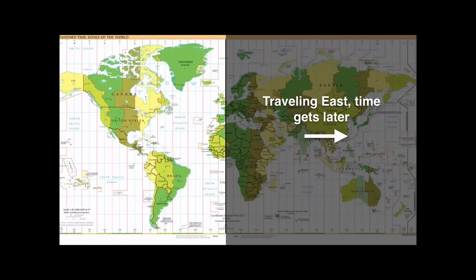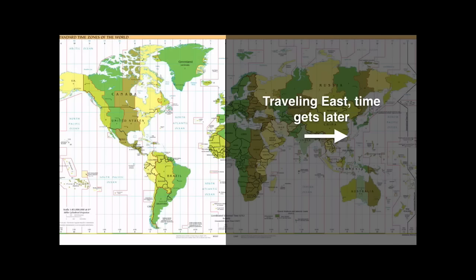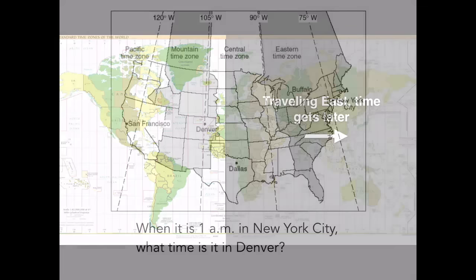This is really a factor in helping us determine how much time is between different areas. Let's take a look at a sample question — somewhat simple. If it's 1 a.m. in New York City, what time is it in Denver? In this particular question, they're giving you a time, 1 a.m., and asking you to look at the lines of longitude given and count backwards.